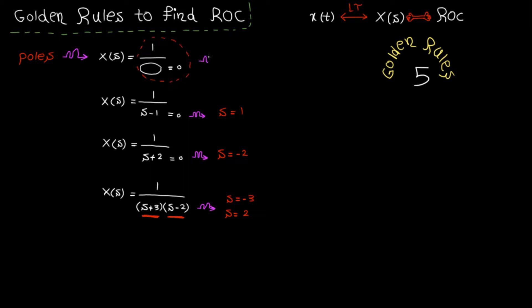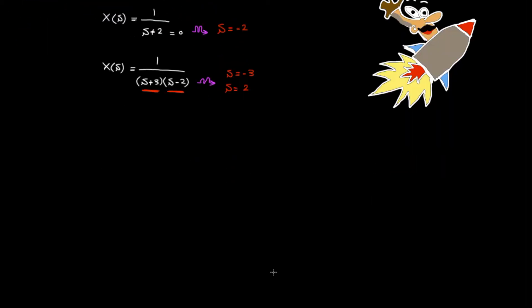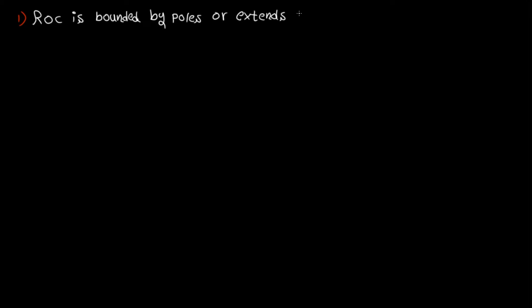The concept of poles plays a key role in control theory, as these are the points that define the boundaries for stability. Now let's go back to the golden rules that help us find the ROC super quickly.